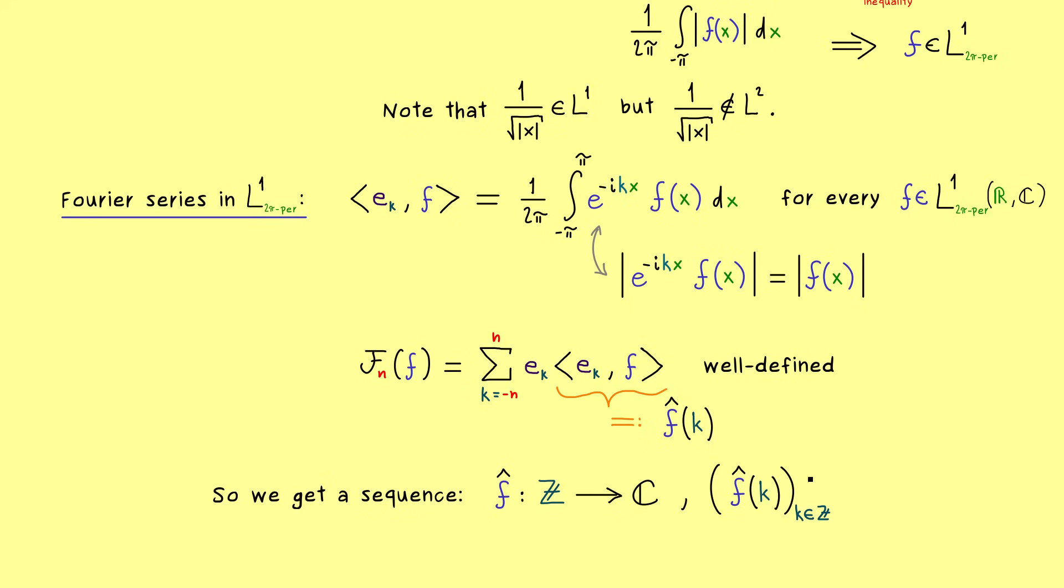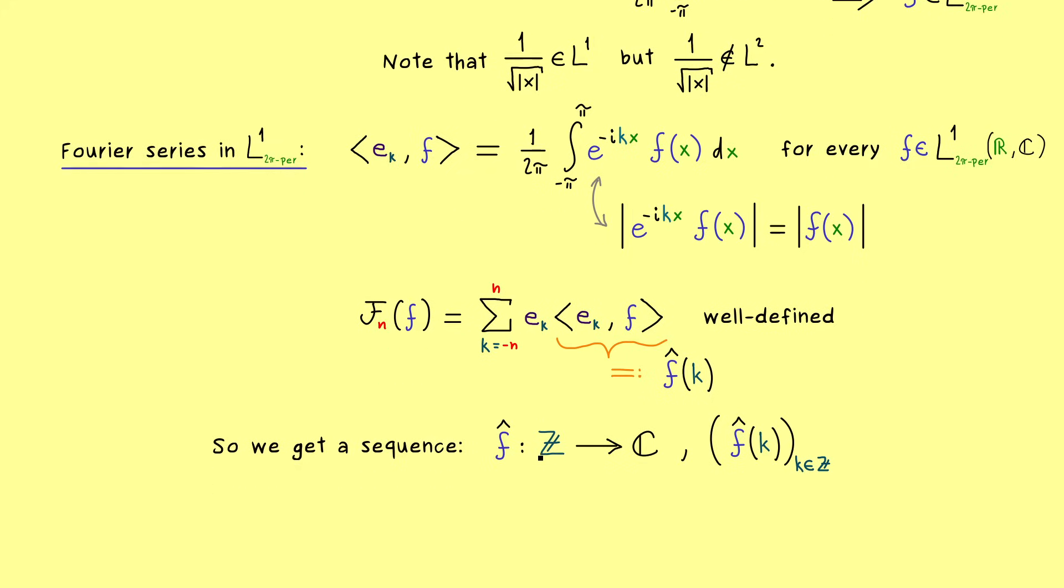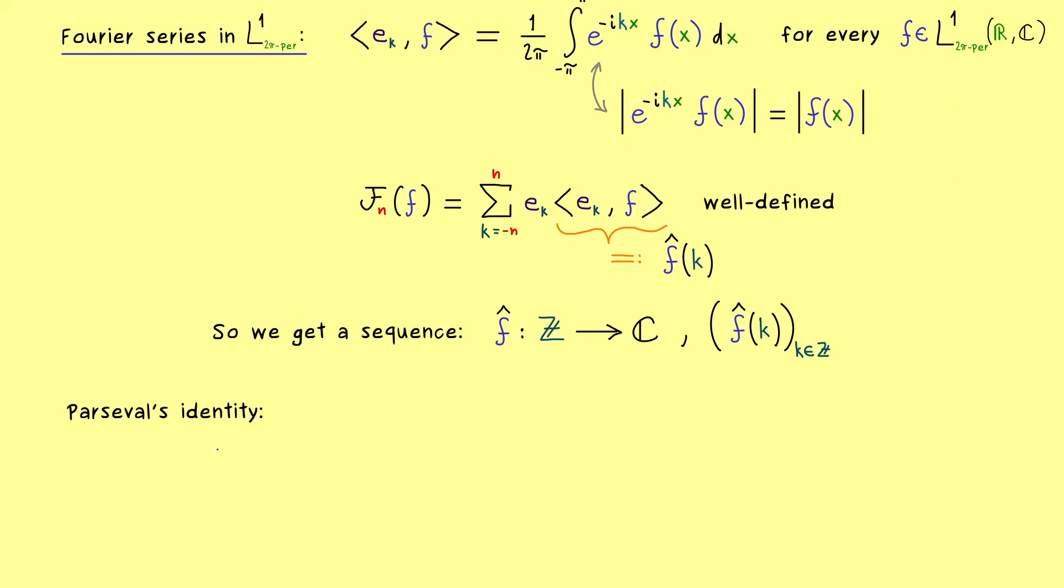So it's important to note that in this case the Fourier transformation gives you a sequence in ℤ. So the question for us is what can we say about this sequence now. And in fact in the L2 case we can say a lot because we have already proven Parseval's identity there. So there our hat is a linear map which has the L2 space as an input space. And on the other hand the output space is clearly a space of sequences.